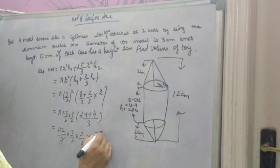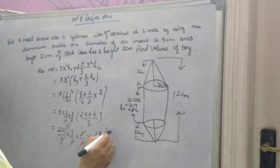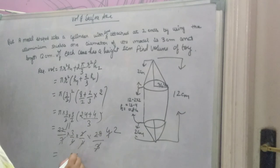Now, 7 into 4 is 28. 3 into 1 is 3. 2 into 11 is 22. 2 into 2 is 4. 11 into 3 is 33, into 2 is 66. The volume is 66 centimeter cube. So, this is the required volume of the model. Thank you.